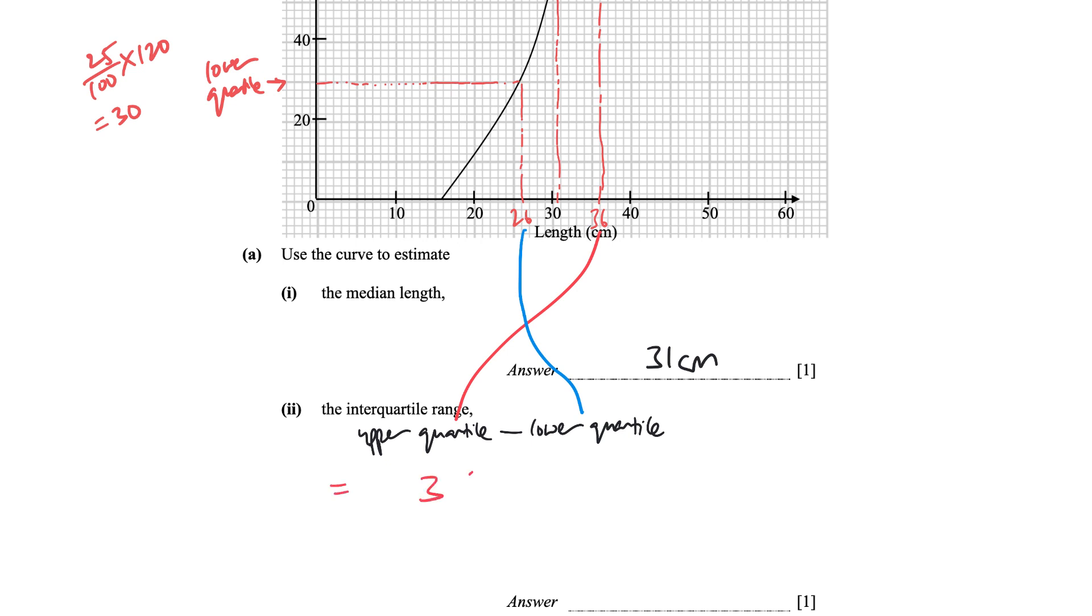So my upper quartile is basically 36, and my lower quartile is basically 26. So this is basically just going to give 36 minus 26, which is 10.